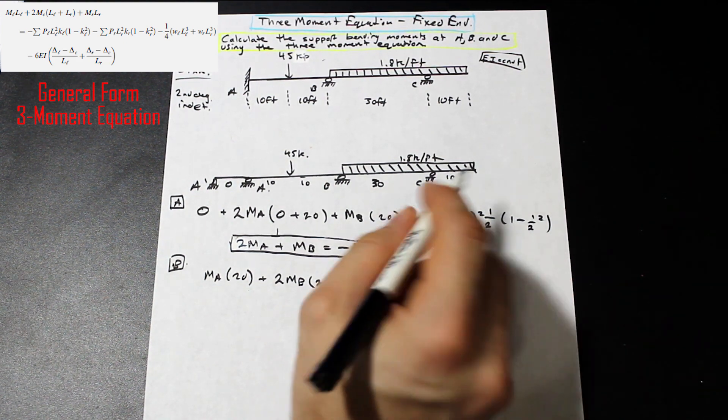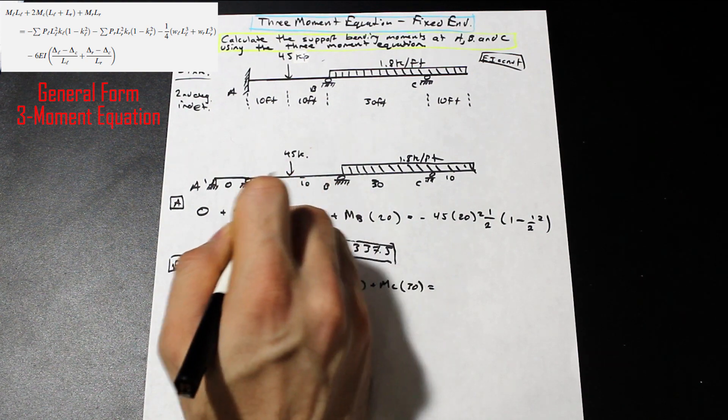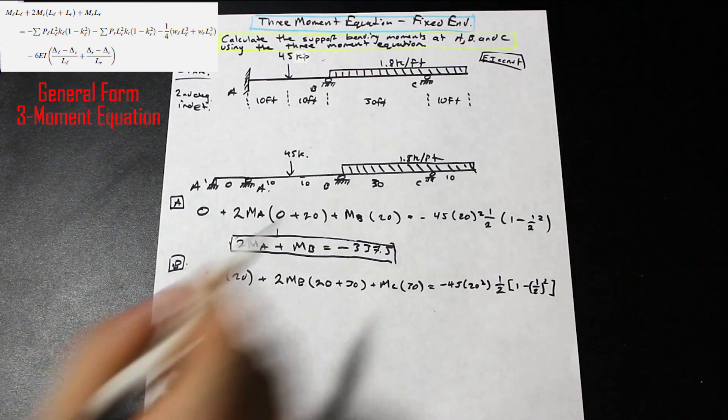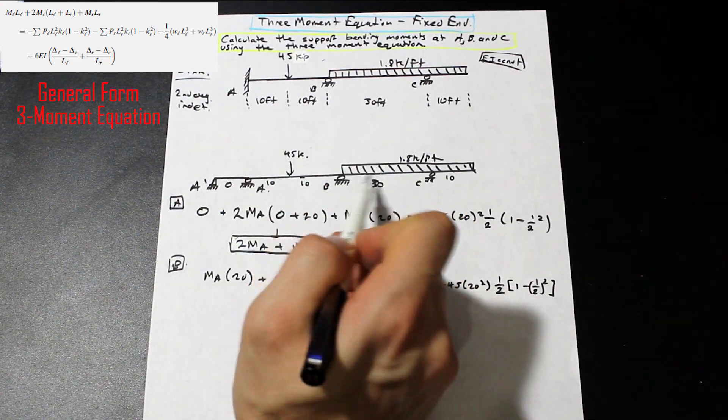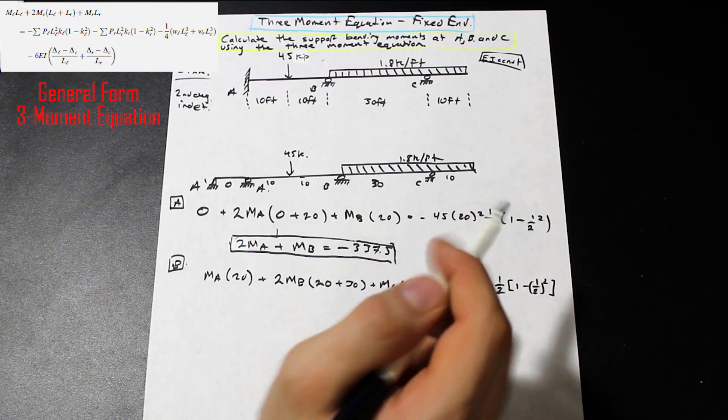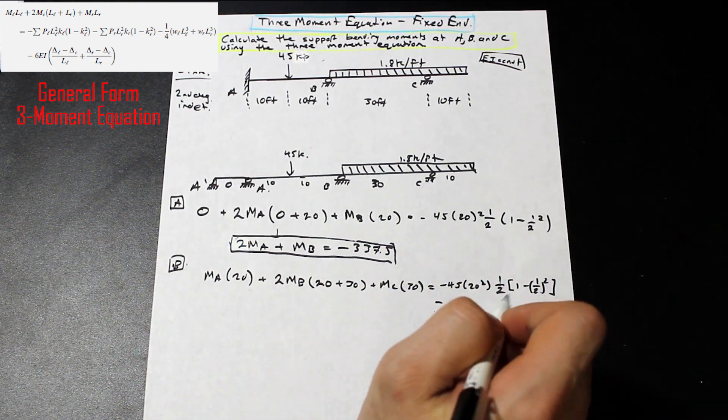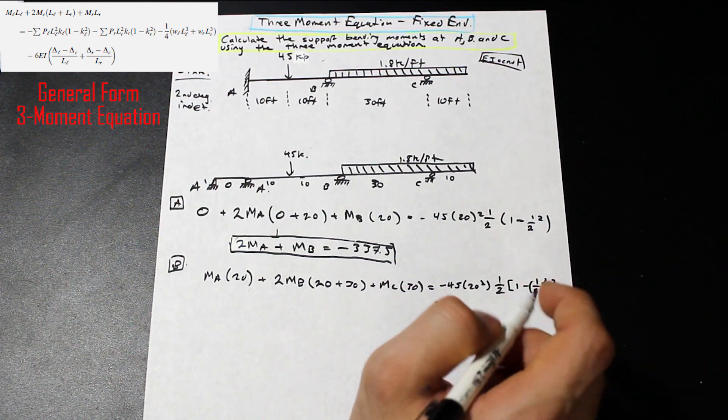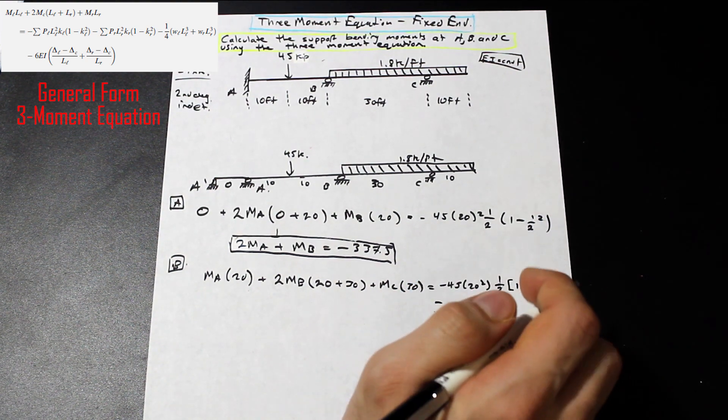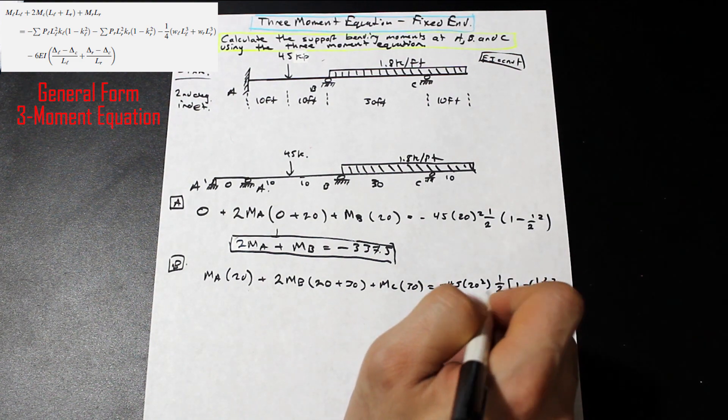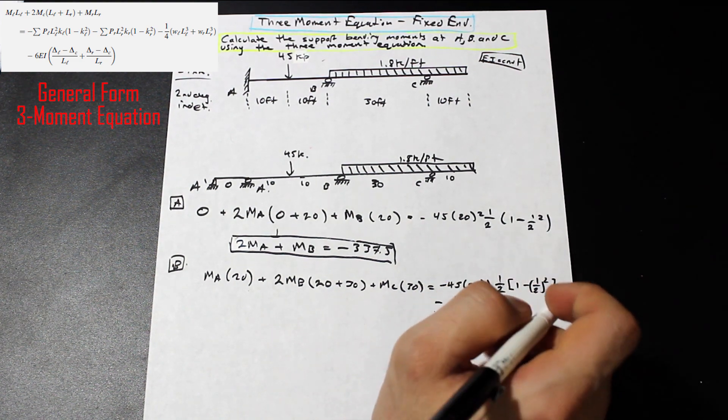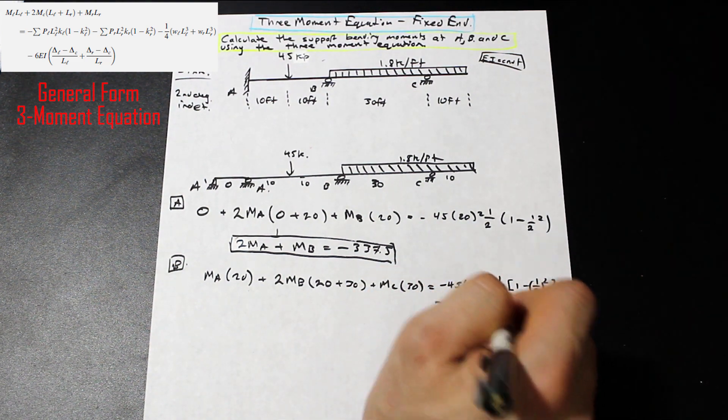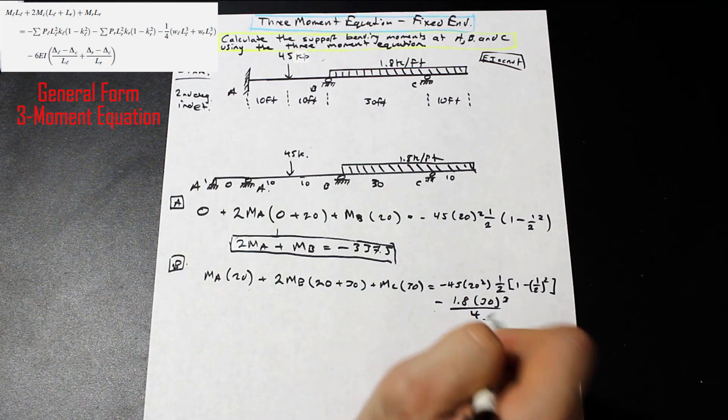And now we can go ahead and take a look at the point load on the left. That's going to be exactly the same term as this. And we do need to take into account this distributed load from B to C here. And that's just simply going to be, I'm just going to come down and write it below. We're going to have minus. So we're doing WR LR cubed over 4I. So that's going to simply be 1.8 times L cubed. So L in this case is 30. So we have 30 cubed, and that's going to be divided by 4. Perfect.